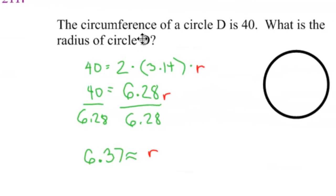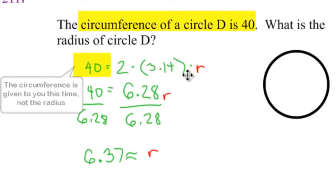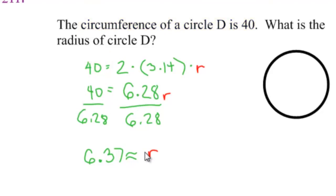For the example to the right, the circumference is given to you. Now we have to find the radius. Substitute everything you know. Circumference is 40. Set it equal to 2 times 3.14. Solve for r from there and you should get 6.37 as your radius.